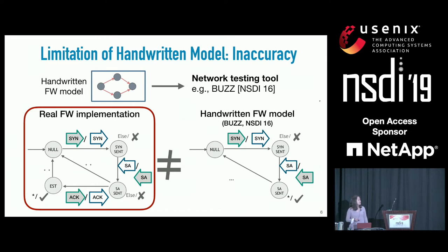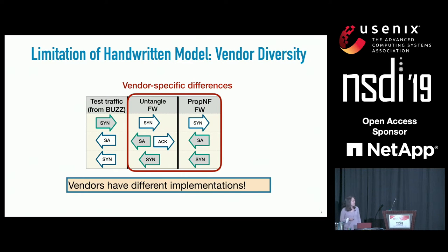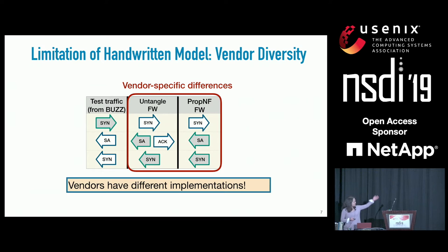We dug deeper and found the root cause: the handwritten firewall model did not reflect the true firewall implementation. Specifically, the real firewall was checking the three-way handshake, whereas the handwritten model was checking for SYN and SYN-ACK only. Second, these handwritten models often assume a homogeneous model across different vendors, but if you look at simple packet sequences, firewalls from different vendors react very differently.